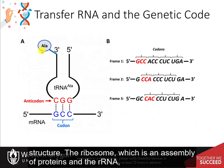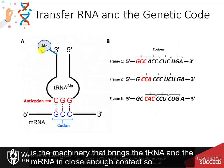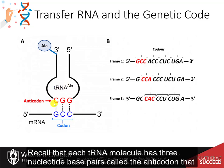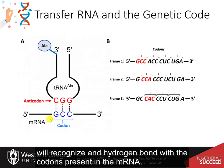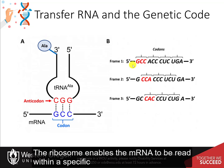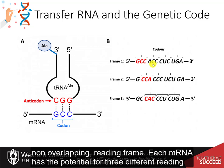The ribosome, which is an assembly of proteins and the ribosomal RNA, is the machinery that brings the transfer RNA and the messenger RNA in close enough contact so that peptide bond formation can occur and the nascent peptide can be created. Recall that each tRNA molecule has three nucleotide base pairs called the anticodon that will recognize and hydrogen bond with the codons present in the messenger RNA. Each tRNA is attached to an amino acid at the 3' hydroxyl end. The ribosome enables the messenger RNA to be read within a specific, non-overlapping reading frame.